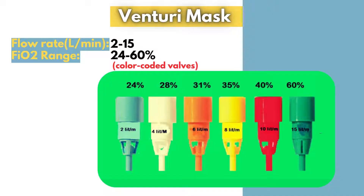The color-coded Venturi adapters deliver the following: Blue adapter — 24% at 2 liters per minute. White adapter — 28% at 4 liters per minute. Orange adapter — 31% at 6 liters per minute. Yellow adapter — 35% at 8 liters per minute. Red adapter — 40% at 10 liters per minute. Green adapter — 50% at 15 liters per minute.